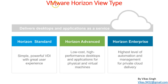VMware provides three types of licensing for VMware Horizon View. The first is Horizon Standard, which gives you simple, powerful VDI and a great user experience. Horizon Standard delivers VDI solutions that provide end users with a great experience using virtual desktops in infrastructure.